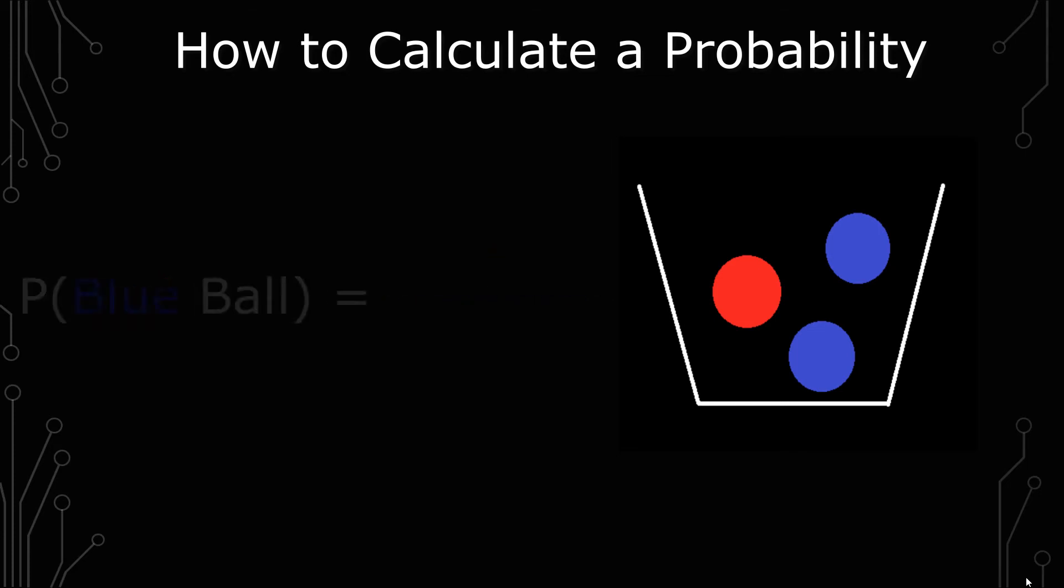And with blue, the probability of blue would be two over three. So that's how that would work, because there's two balls there.